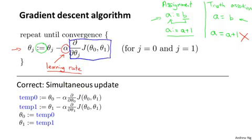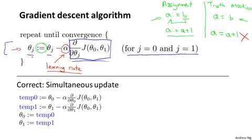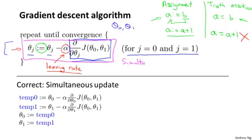I don't want to talk about the derivative term right now, but I will derive it and tell you exactly what it is later. Some of you will be more familiar with calculus than others, but even if you aren't, don't worry — I'll tell you what you need to know about this term. Now there's one more subtlety about gradient descent: we're going to update both θ0 and θ1, so this update takes place for j = 0 and j = 1. The subtlety of how you implement gradient descent is that for this update equation, you want to simultaneously update θ0 and θ1.